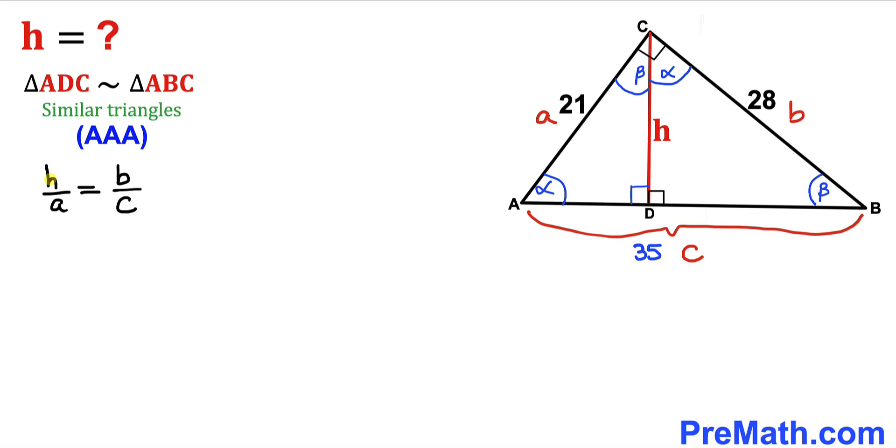Now let's go ahead and solve for H. So I'm going to multiply both sides by a, and we can see that this a and a is gone. So therefore our H height value turns out to be a times b divided by c.